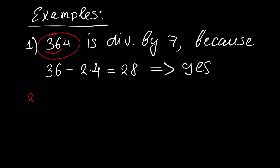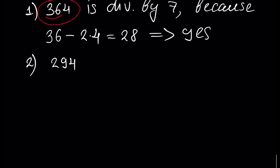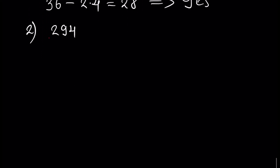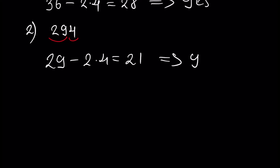Let's give another example for better understanding. Take 294: 29 minus 2 times 4 is equal to 21. 21 is divisible by 7, so the answer is yes — our initial number 294 is divisible by 7.